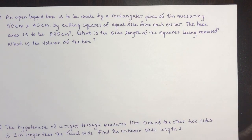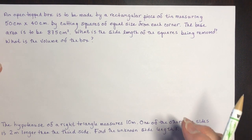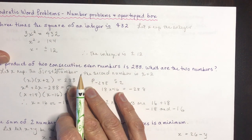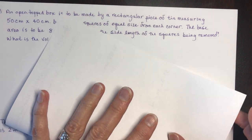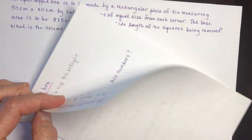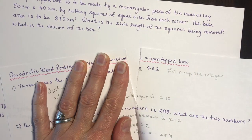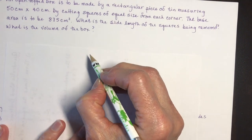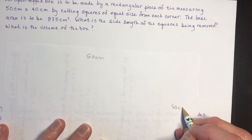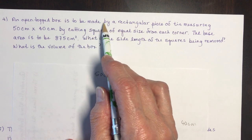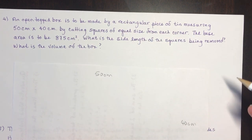Now for the magic open-top box. If you haven't seen this before, let me give you a visual. We take a square piece of paper like this — say a 50 by 40 centimeter piece of tin. An open-topped box is made from a rectangular piece of tin by cutting squares out of each corner.